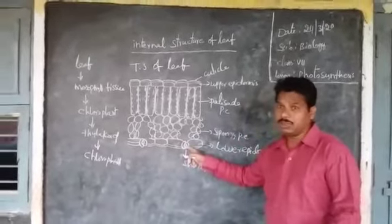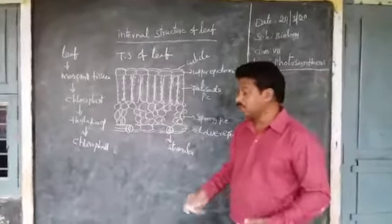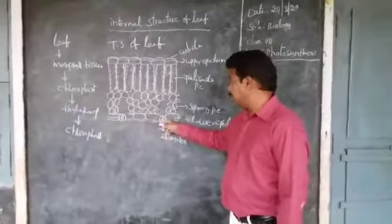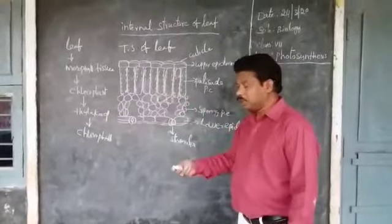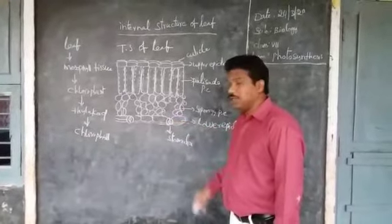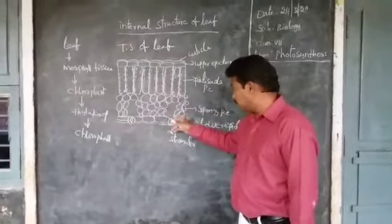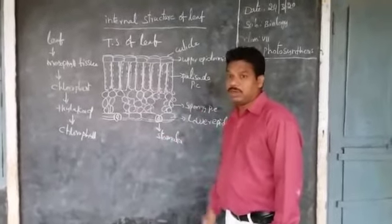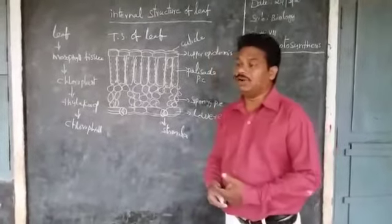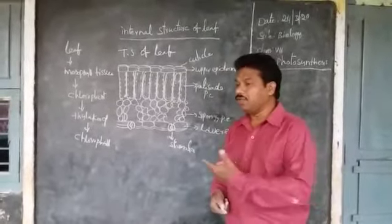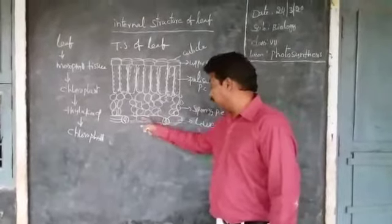Again, we know about stomata. Stomata are present on the lower side of the leaf. Every time, on the lower side of the leaf, you can see the stomata. And these are important for gas exchange. The carbon dioxide from the atmosphere will enter into the leaf through these stomata only. And after photosynthesis, the plant produces oxygen — that also will come out through these stomata. So these are called leaf openings. Gas exchange means: entering of carbon dioxide into the leaf and coming out of oxygen from the leaf. This is called gas exchange. That is conducted through the stomata.